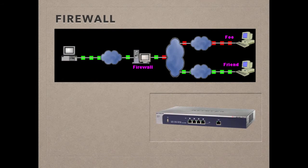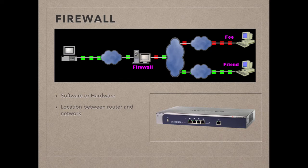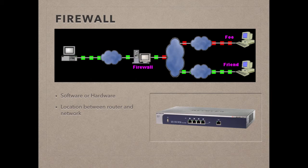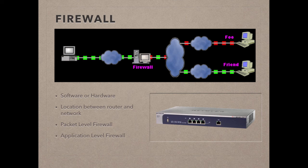A firewall can either be software within a router or a separate device that sits between the router and the network. Its purpose is to act as a gatekeeper, stopping threats like denial of service attacks (DOS) and preventing sensitive information from leaving the network. Firewalls work in one of two ways: a packet level firewall examines the source and destination of each packet and applies rules to allow or block them. An application level firewall is more complex — the user must log in and is only allowed access to certain areas of the network depending on their security clearance.